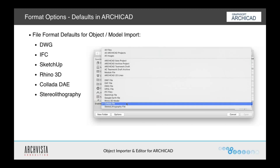I can also add in Revit RFA, which I don't have on here, but that is an add-on. It's a free add-on from dimsexx.com, and you can download and install that, and that will be another option that allows you to bring in RFA files.